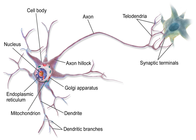The interactions between ion channels and ion pumps produce a voltage difference across the membrane, typically a bit less than one-tenth of a volt at baseline. This voltage has two functions: first, it provides a power source for an assortment of voltage-dependent protein machinery embedded in the membrane; second, it provides a basis for electrical signal transmission between different parts of the membrane.